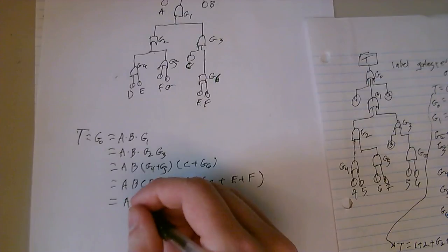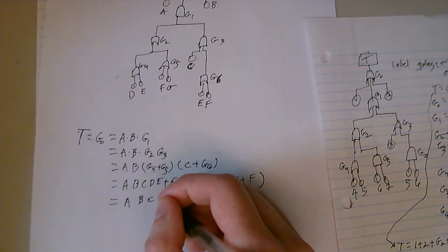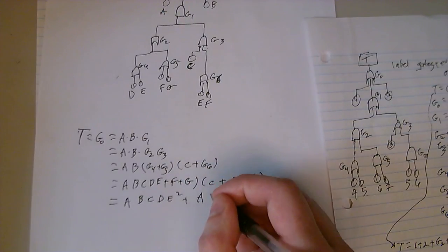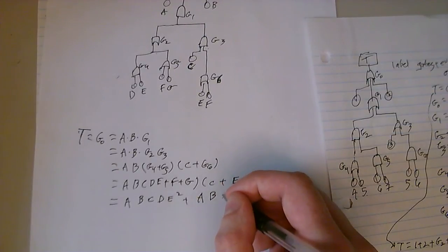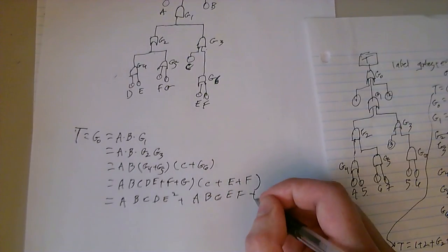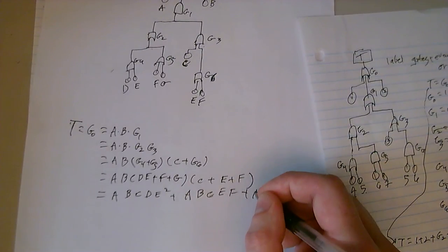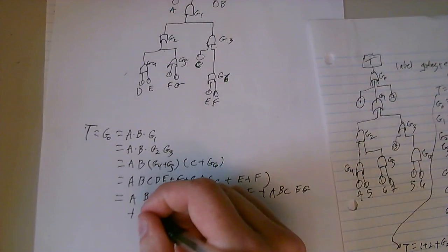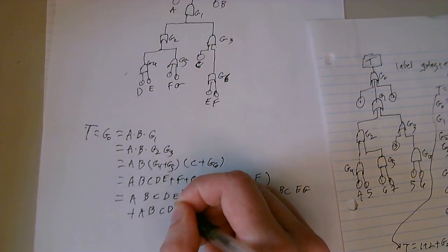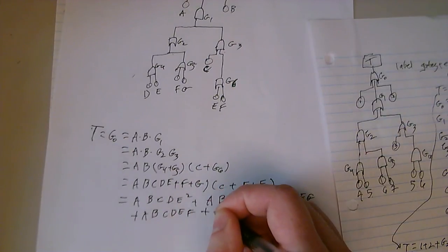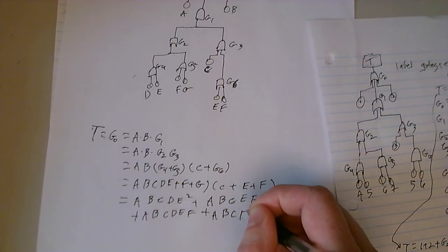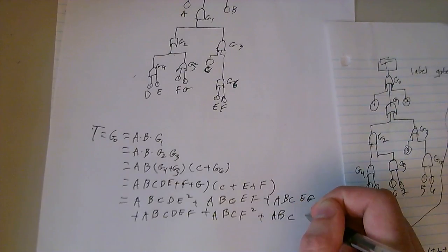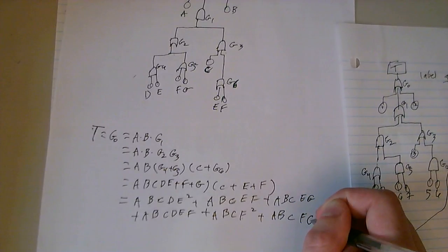We get something like this, A, B, C, D, E squared plus A, B, C, E, F. Just copying this down, so there might be a mistake in there. A, B, C, E, G plus A, B, C, D, E, F plus A, B, C, F squared plus A, B, C, F, G.